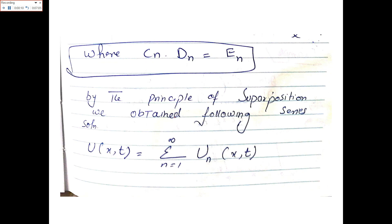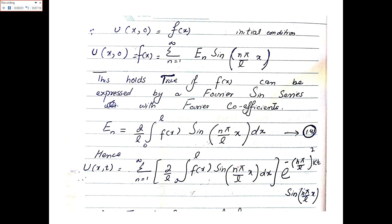By the principle of superposition, the full solution is u(x,t) = Σ(n=1 to ∞) u_n(x,t). Applying the initial condition u(x,0) = f(x), we get Σ E_n·sin(nπx/l) = f(x). This holds if f(x) can be expressed as a Fourier sine series, and the coefficients are given by E_n = (2/l)·∫₀ˡ f(x)·sin(nπx/l)·dx.